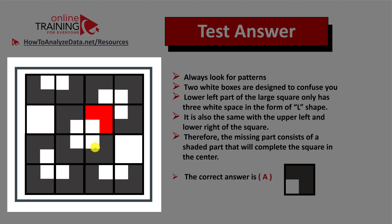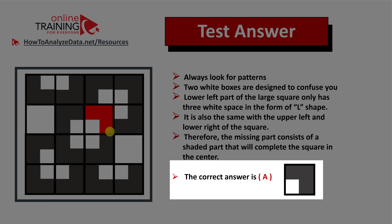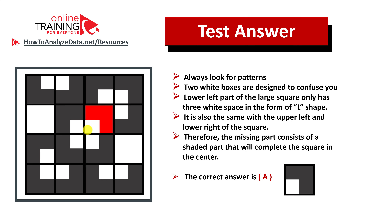If you look closely, the middle box right in the center of the larger square is symmetrical — the L shape at the bottom and the shape in the upper right corner represent symmetry for this middle square consisting of four small squares. Two white boxes are designed to confuse you. The lower left part of the larger square only has three white spaces in the form of an L shape, and a similar symmetrical pattern follows in the upper right corner. The correct answer is choice A.